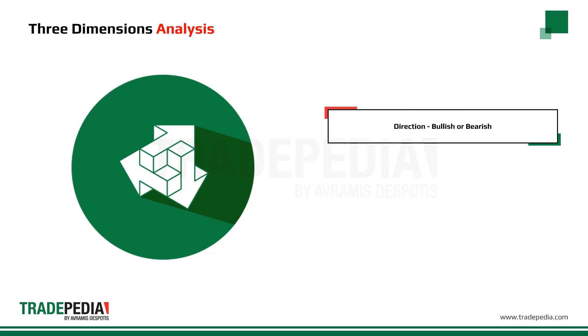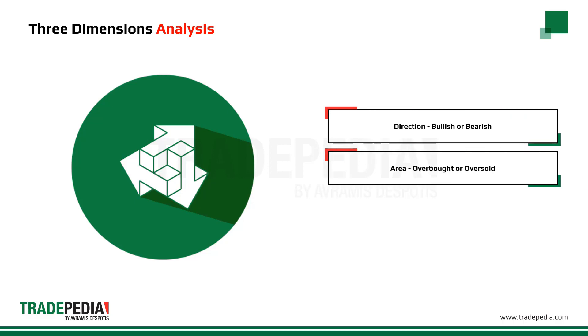The three dimensions are: whether the oscillator is bullish or bearish, and whether it is overbought or oversold.